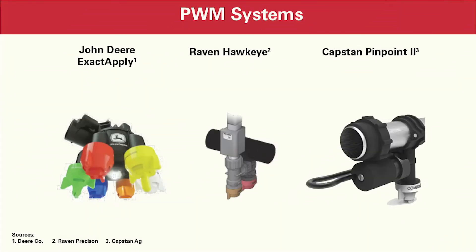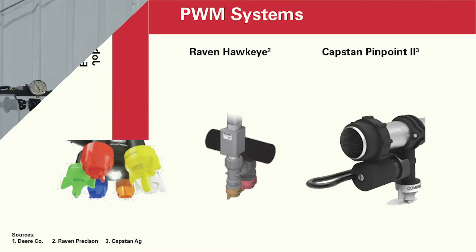A pulse width modulated system is able to actually slow the flow down at the nozzle and put less fluid out while still maintaining good distribution and maintaining our desired pressure across the spray boom. These systems use individual solenoids mounted to every nozzle on your sprayer boom, and this is used to control the flow to each individual nozzle.